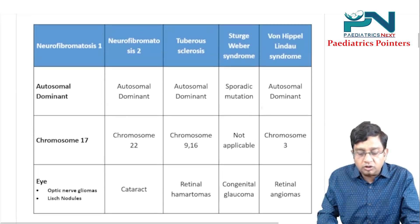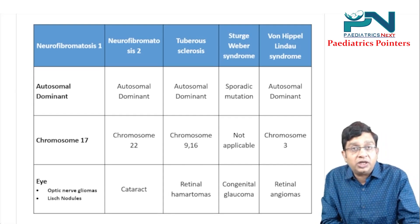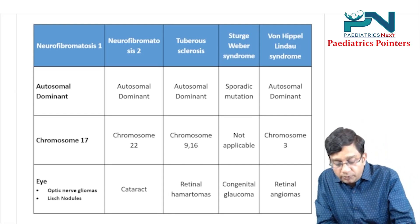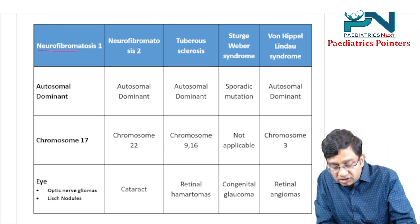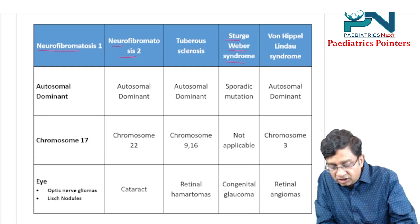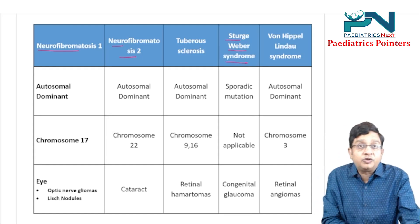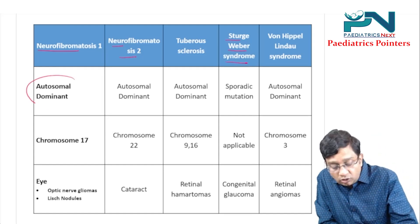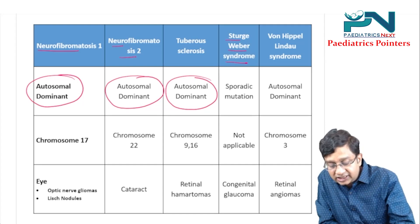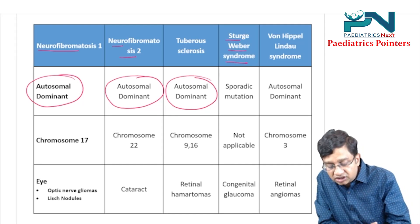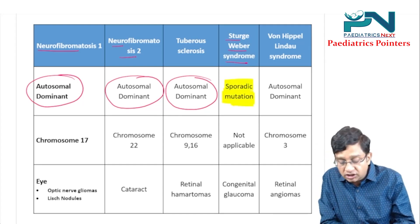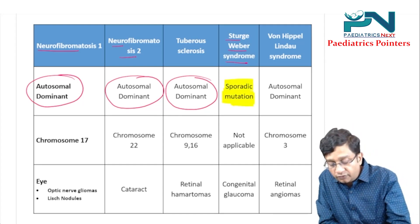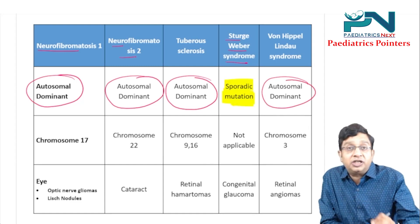We are discussing all the neurocutaneous syndromes: NF1, NF2, tuberous sclerosis, Sturge-Weber, and VHL syndrome. The mode of inheritance in all four is autosomal dominant, except in Sturge-Weber where there is a sporadic mutation. The rest are all autosomal dominant.